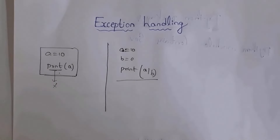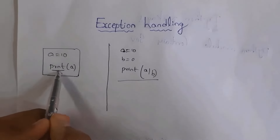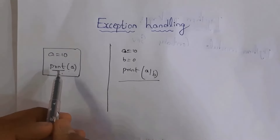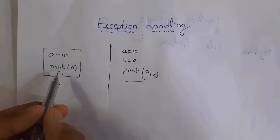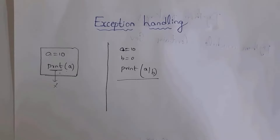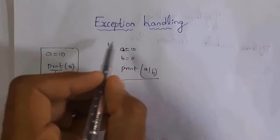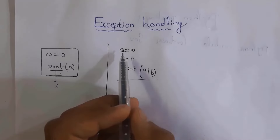Before starting, you need to know the difference between an exception and an error. For example, I have written a = 10 and then 'prnt(a)' — the correct spelling is 'print', but here I wrote it wrong, so this is an error. Whenever an error occurs in our program, the program will not get executed. An exception is also an error, but the difference is: when an error occurs, the program stops execution, whereas when an exception occurs, the program does get executed but then displays an error after execution.